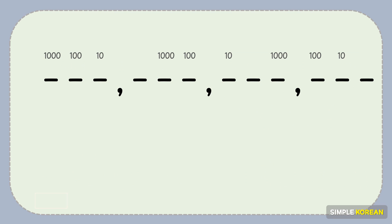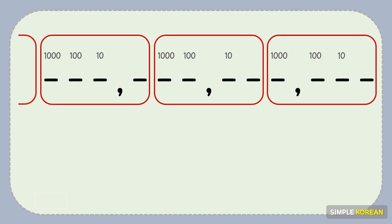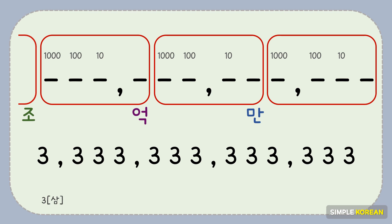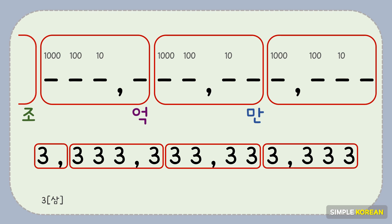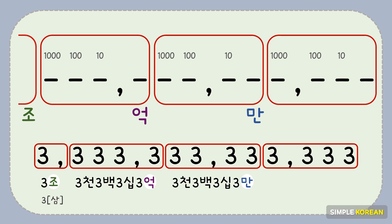When you read a large number, first divide it into four-digit groups. After that, just put the unit of the number: 만, 억, 조. Now you can read this long number. The number 3 is 삼 in Korean. So this number is 3조, 3,333억, 3,333만, 3,333.